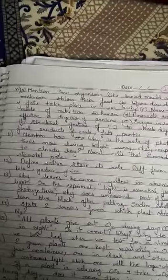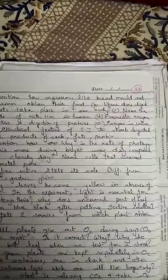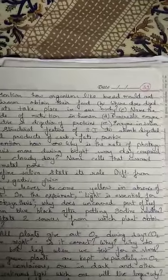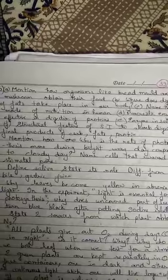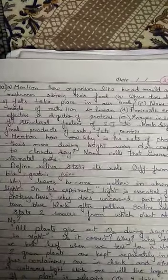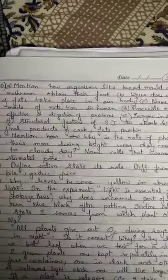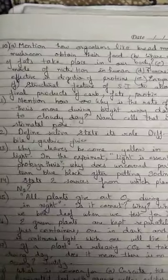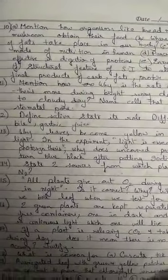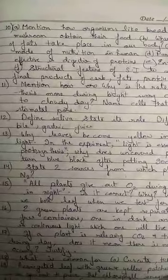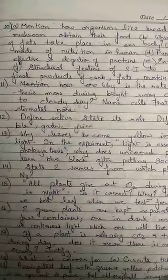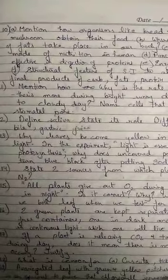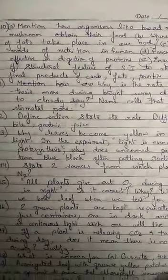Question 10, part A: how do organisms like bread mold and mushroom obtain their food? Bread mold and mushroom are saprophytes — they undergo saprophytic mode of nutrition. They carry out extracellular digestion, releasing digestive enzymes onto dead and decaying organisms. The material is digested outside the body into simpler nutrients, which are then absorbed directly into the body.